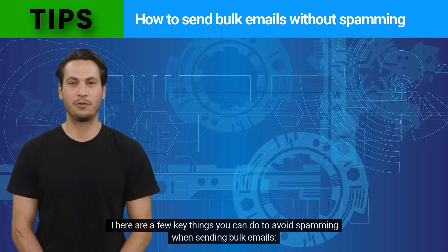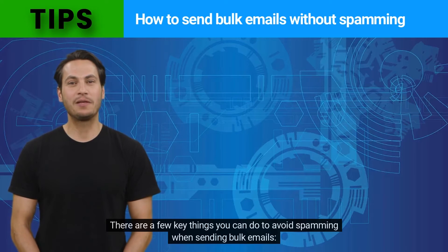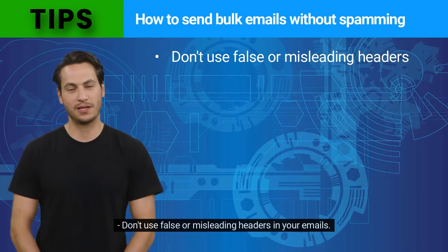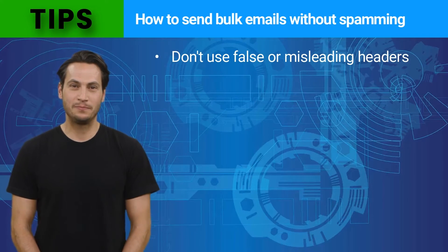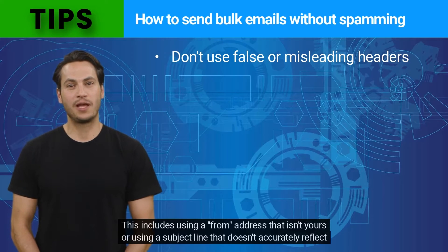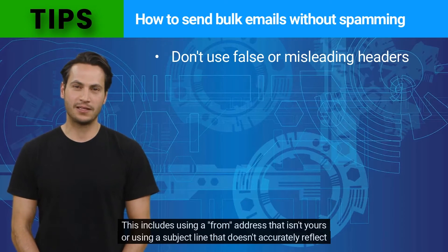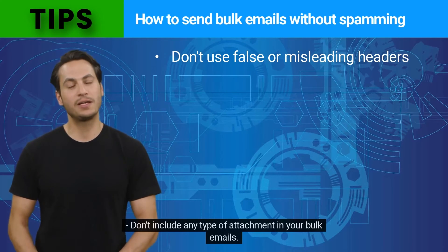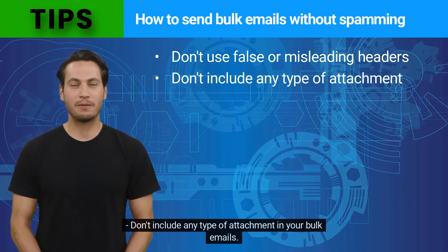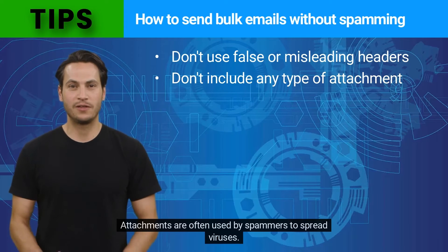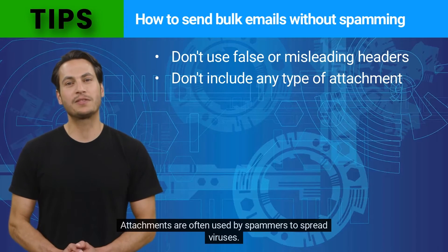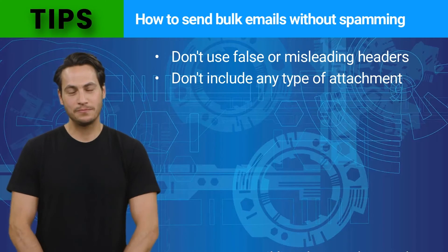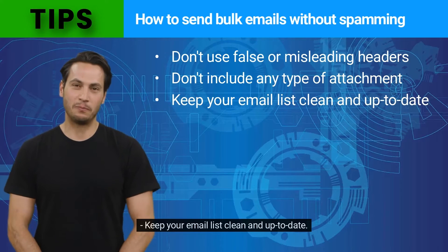There are a few key things you can do to avoid spamming when sending bulk emails. Don't use false or misleading headers in your emails — this includes using a from address that isn't yours or using a subject line that doesn't accurately reflect the content of the email. Don't include any type of attachment in your bulk emails, as attachments are often used by spammers to spread viruses. Keep your email list clean and up to date.